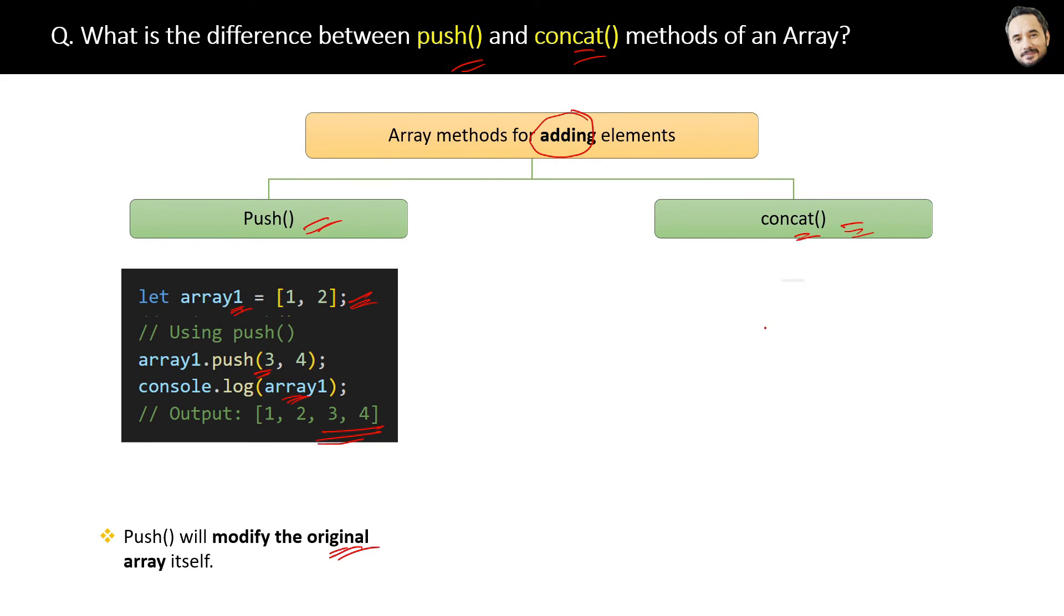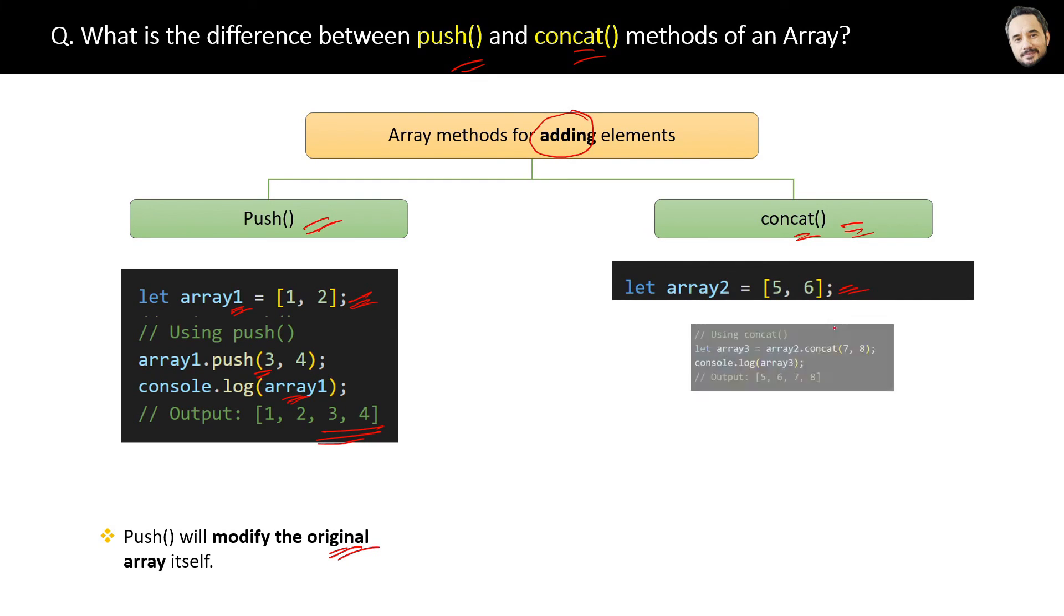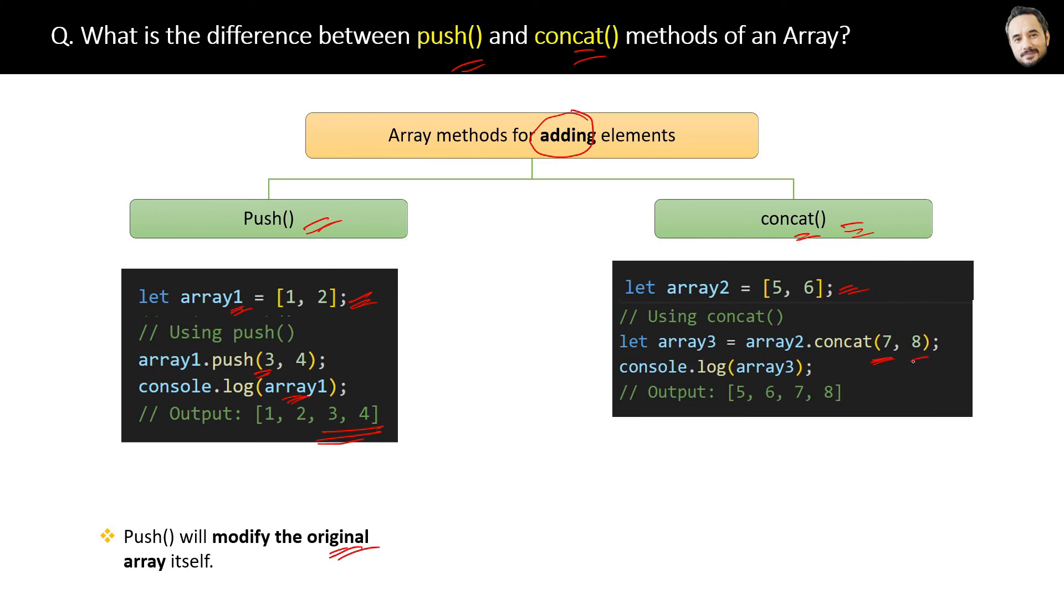Okay, now let's see the concat method. If we have an existing array, then we can use the concat methods to add new elements to it. But remember, by adding the elements you are basically creating a new array which is then assigned to this array 3.